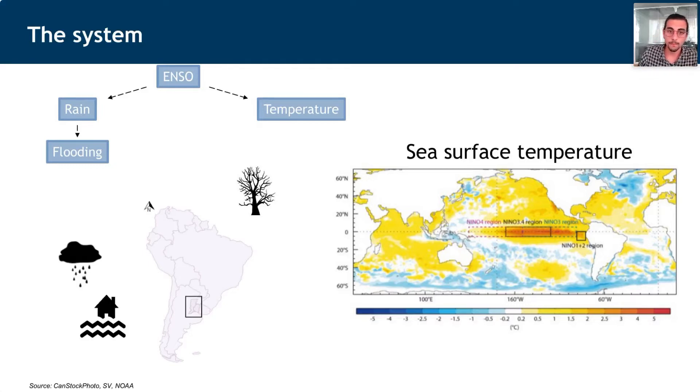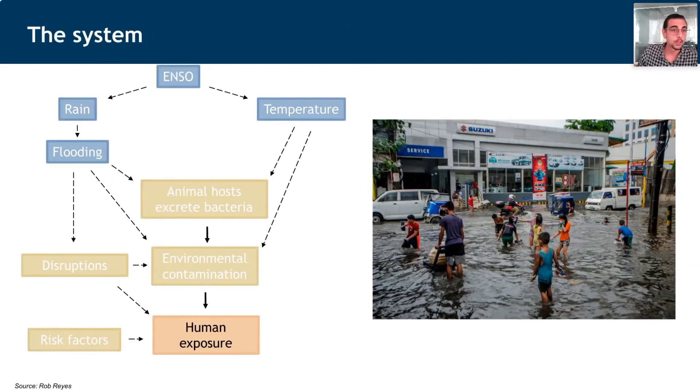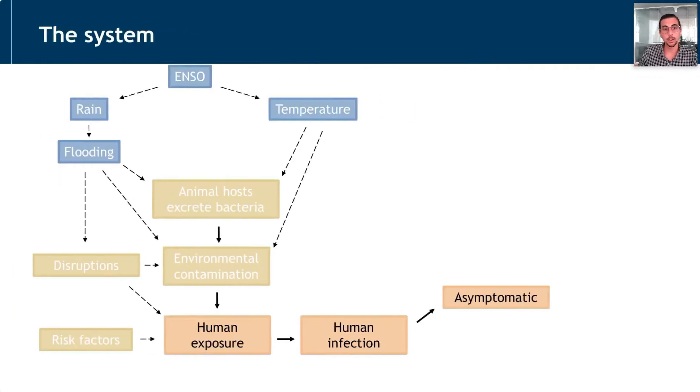During an El Niño event, the sea surface temperature at the Pacific Ocean increases with positive anomalies, and that leads to an increase in precipitation and flooding events. When these conditions change, we have an increase in the level of exposure because we have animal hosts releasing bacteria in the water, leading to environmental contamination and people getting exposed, in addition to other risk factors like occupational exposure and recreation.